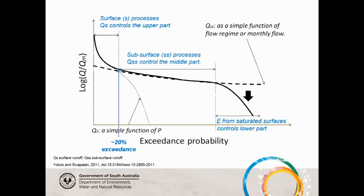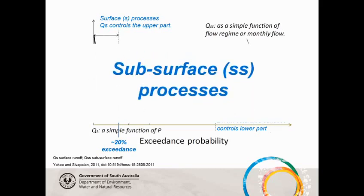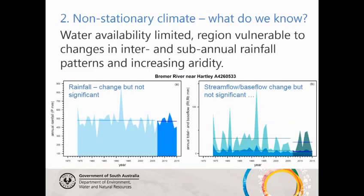The way that's managed is in terms of the flow duration curve. The modelling has shown us that environmental outcomes can be achieved if we pass all of this — this is a log scale of flow up the side, and a probability scale here, so the volume of the flows is much greater at this end. This study has identified different processes for different parts of the flow duration curve, and the amount we're passing is in the realm of subsurface processes, which we haven't done before.